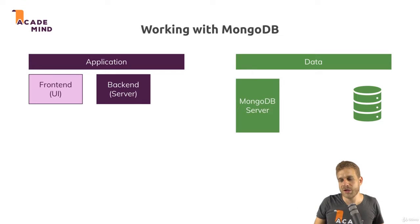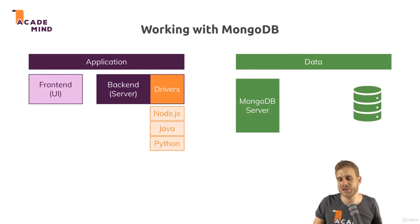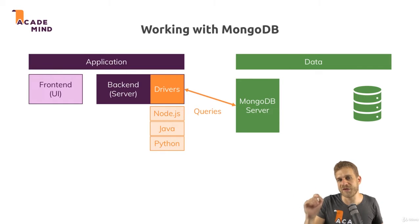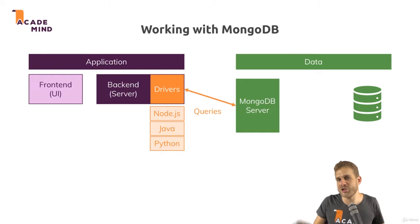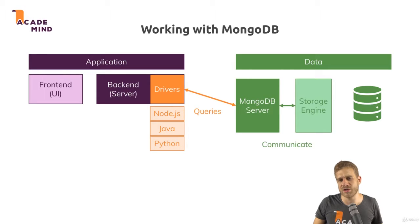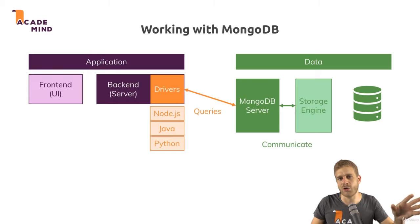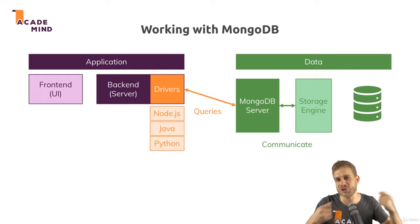You have the MongoDB server, and on the backend server where you write your code, you have drivers for the different languages. The drivers interact with the MongoDB server — the MongoDB server is what we start with the mongod command. The MongoDB server will not directly write data into files, but talk to a so-called storage engine. You could replace this with your favorite storage engine, but the default one called WiredTiger is actually an awesome storage engine which allows you to efficiently work with and store your data.